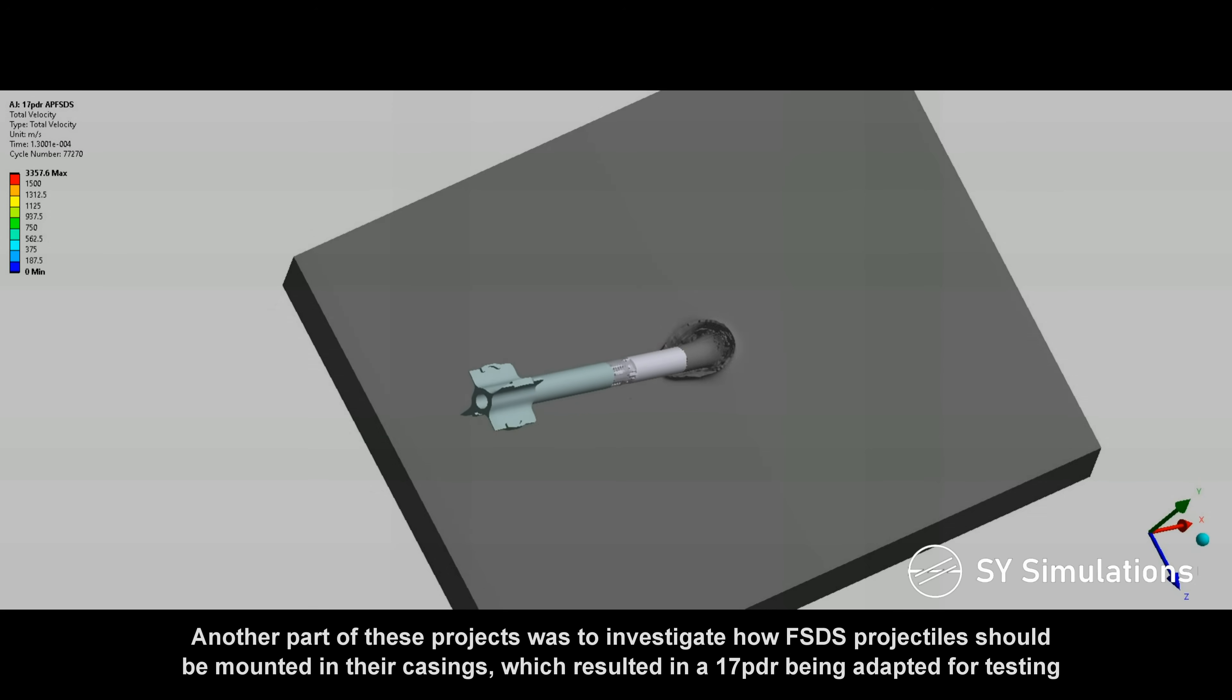Another part of these projects was to investigate how FSDS projectiles should be mounted in their casings, which resulted in a 17-pounder being adapted for testing.